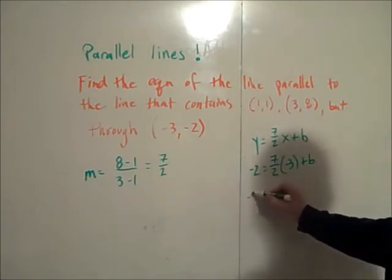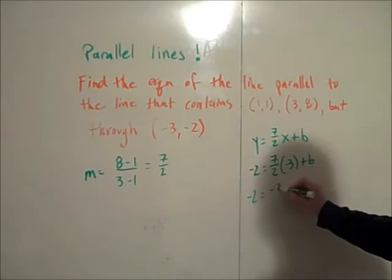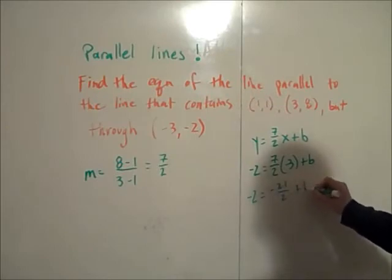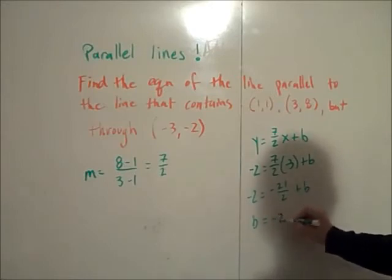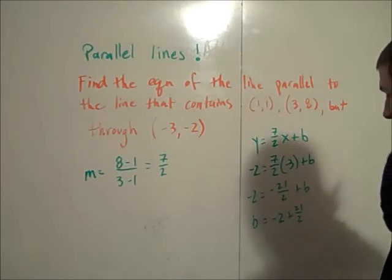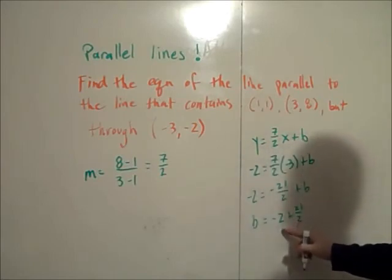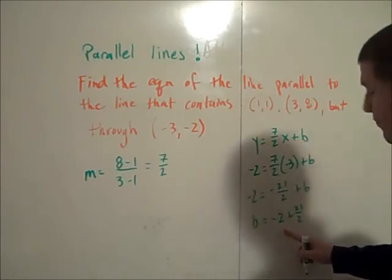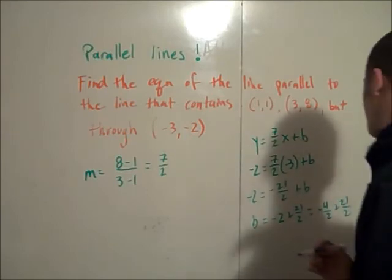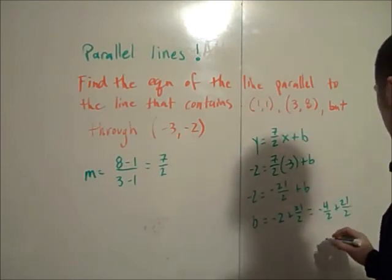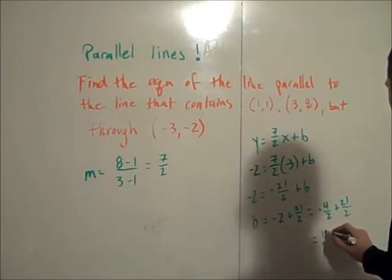So I have -2 equals -21/2 plus b and so b—I'm going to add 21/2 to both sides—is -2 plus 21/2. We should find a common denominator by multiplying this 2 top and bottom by 2 and so this is -4/2 plus 21/2. That's 17/2, 17/2, or 8.5.